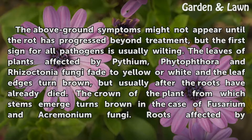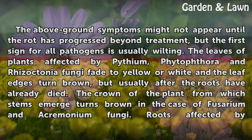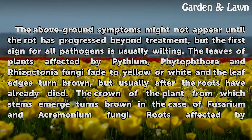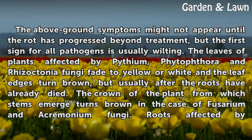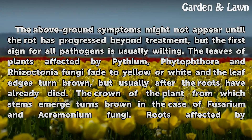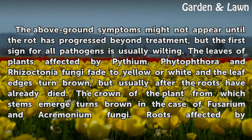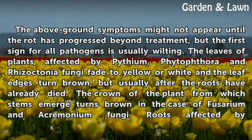The above-ground symptoms might not appear until the rot has progressed beyond treatment, but the first sign for all pathogens is usually wilting. The leaves of plants affected by Pythium, Phytophthora, and Rhizoctonia fungi fade yellow or white and the leaf edges turn brown, but usually after the roots have already died.